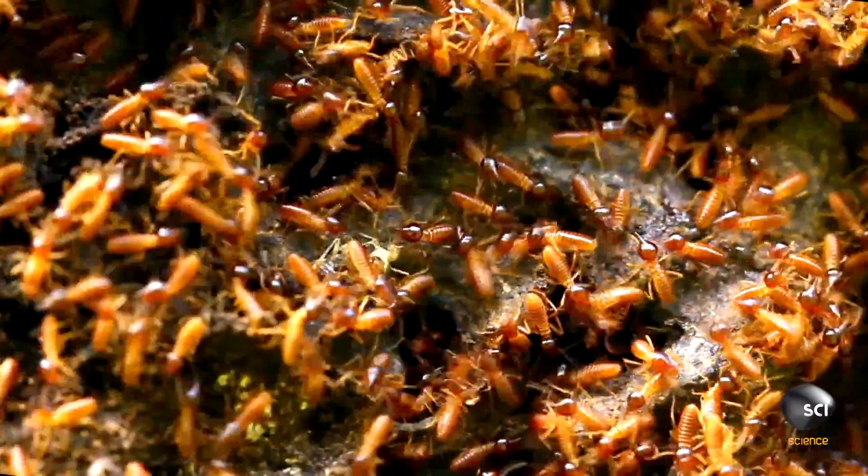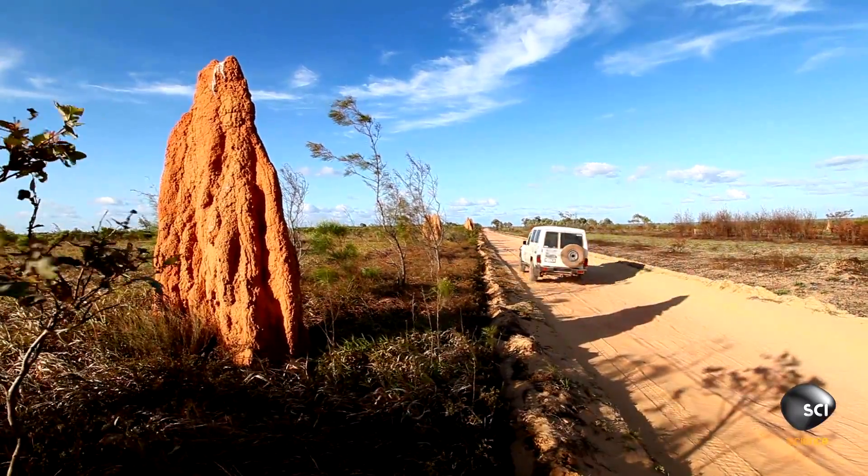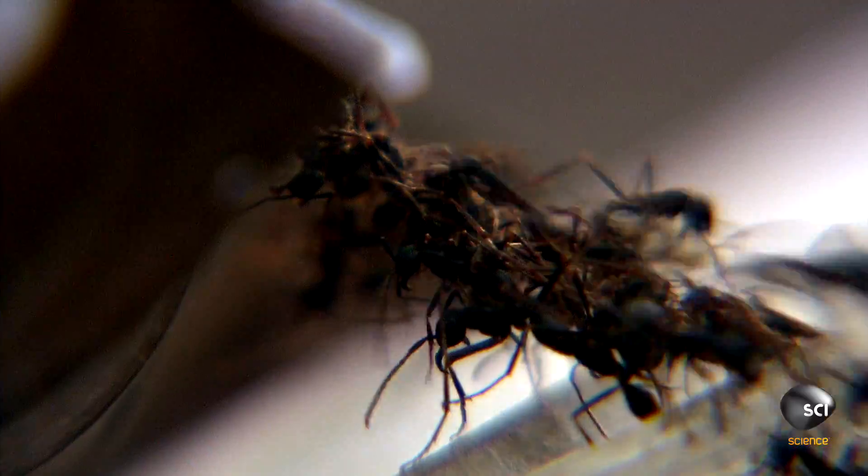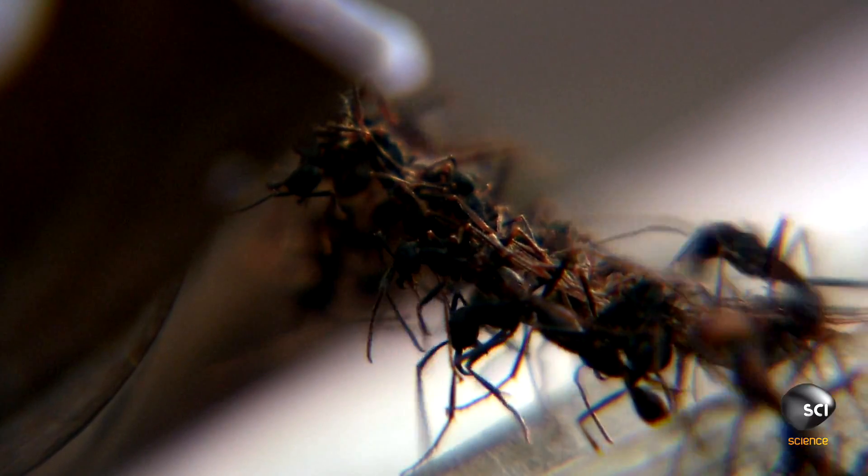South African termite colonies build amazing 25-foot air-conditioned structures. Army ants form themselves into attack columns and even bridges, all based on a collective brain.